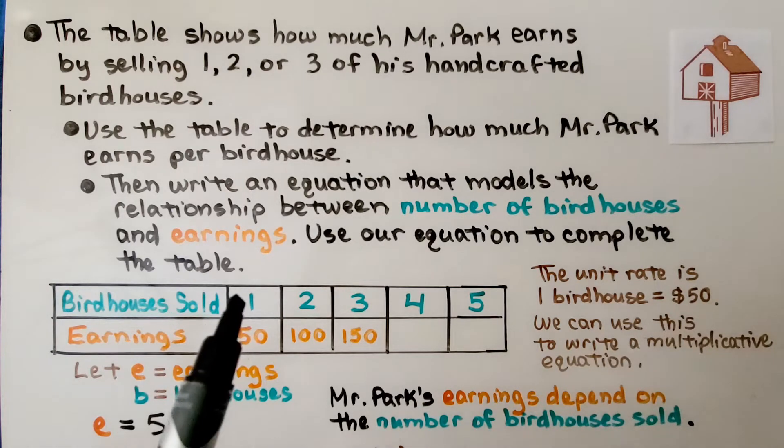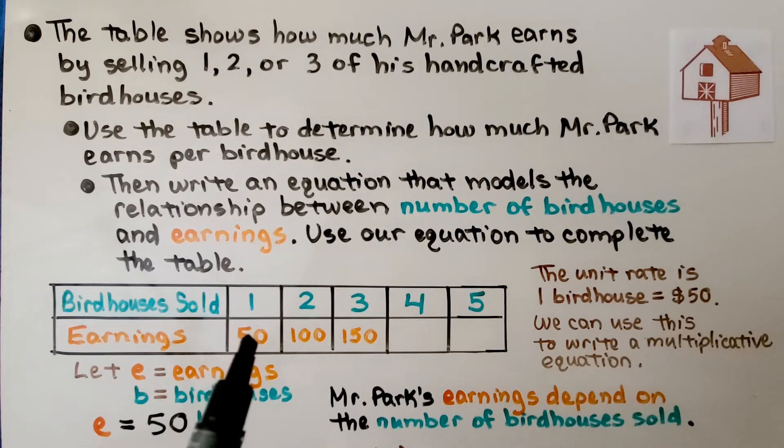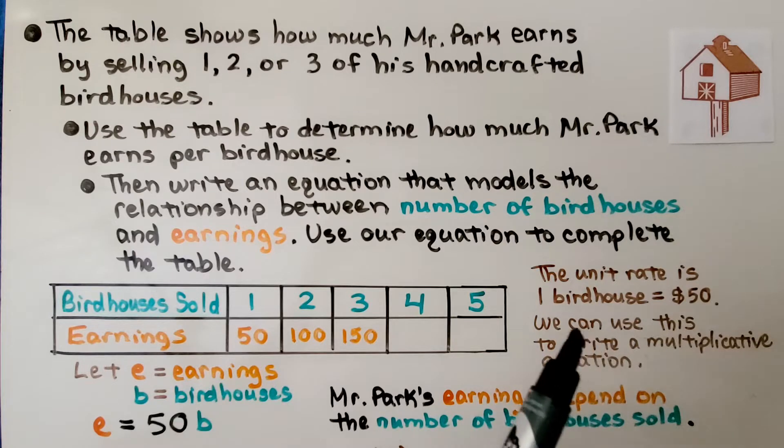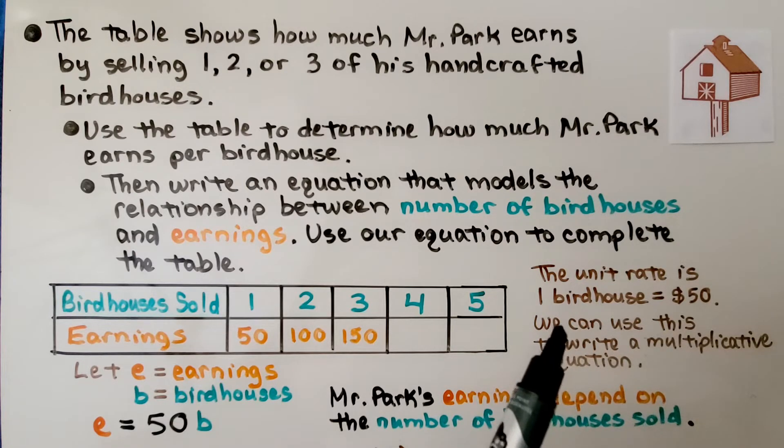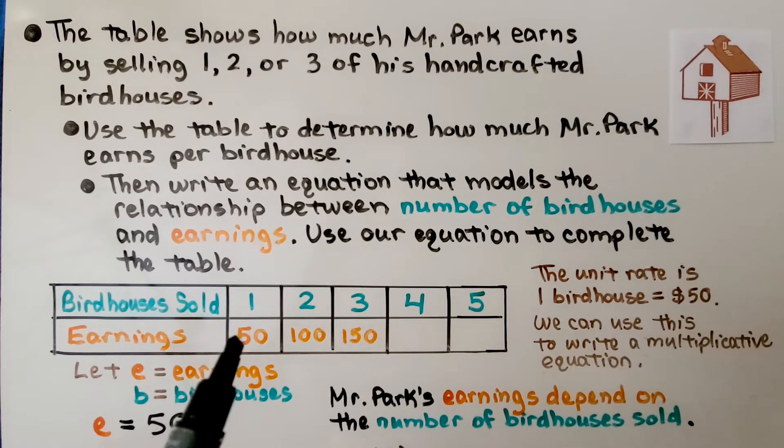We can see if he sells one birdhouse, he makes $50. The unit rate is one birdhouse for $50. We know that's how much he makes for each birdhouse. We can use this to write a multiplicative equation.